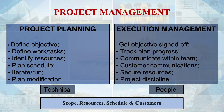The people aspect of project management includes executive management, getting objectives signed off, tracking plan progress, communicating with the team and customers, securing resources, and maintaining project discipline. Both people and material resources are quite important to complete a project successfully.